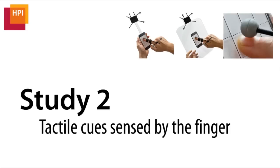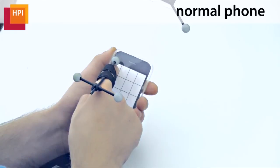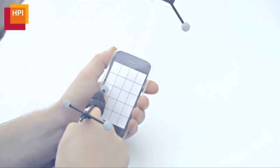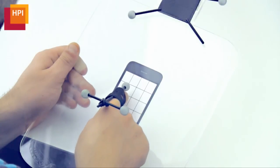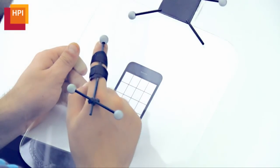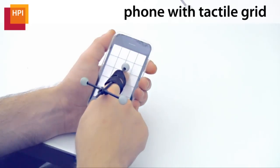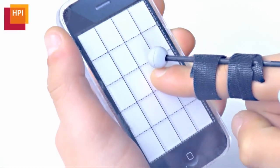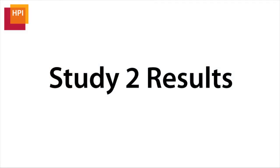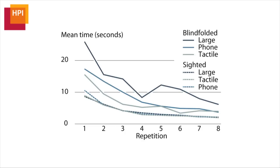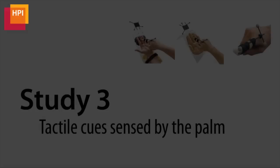Therefore, in the second study, we explored the role of tactile cues sensed by the pointing finger. The first condition contained the regular phone. The second condition deprived the participant of the phone's bezel to confirm if this was an important cue. And the third condition used a regular phone with an engraved tactile grid on the surface. We found that when not blindfolded, all conditions performed similarly. When blindfolded, the bezel-less phone was substantially impaired as expected. But we also found that the tactile grid only improved performance when learning the interface, not in the second half of the study.